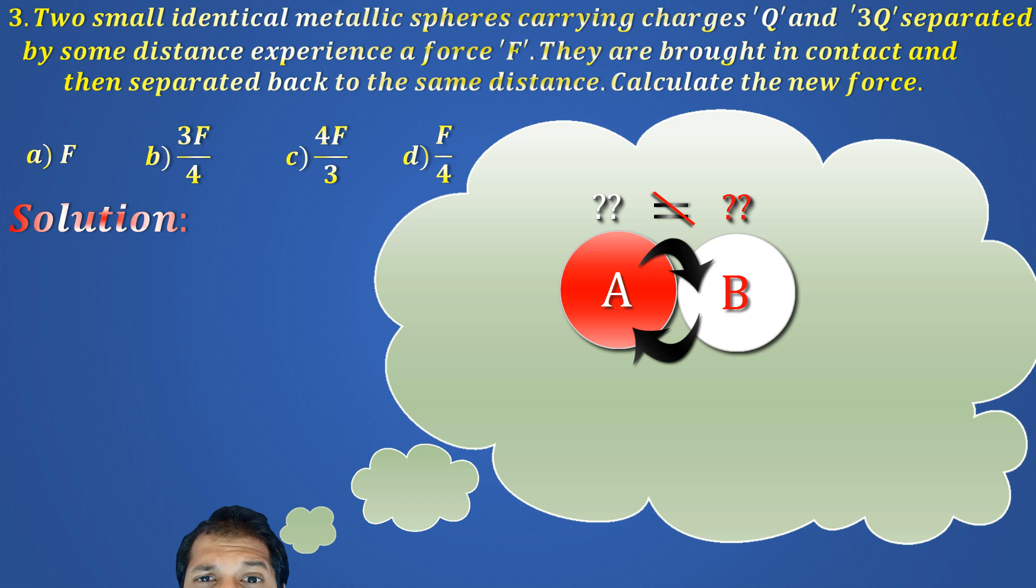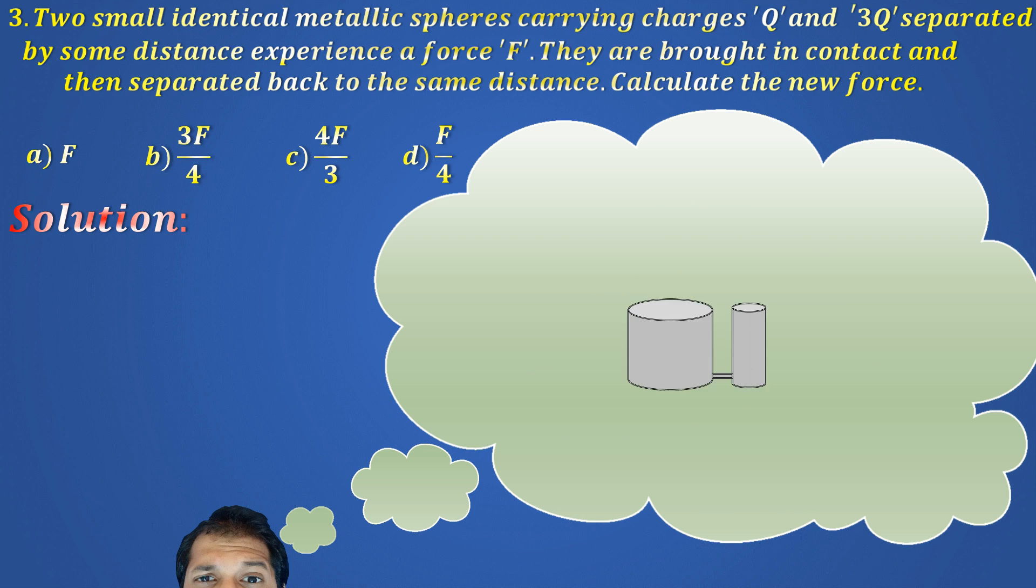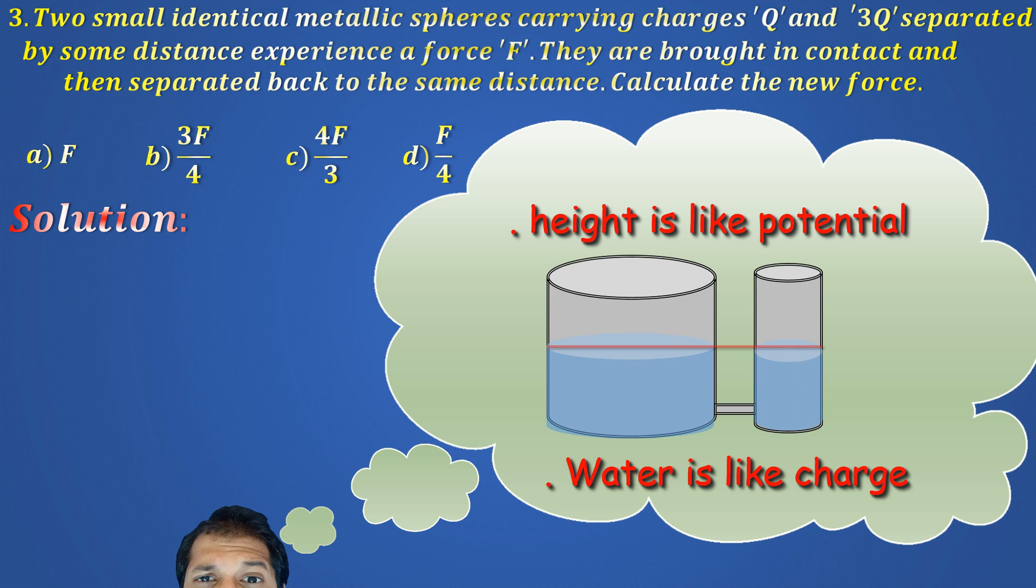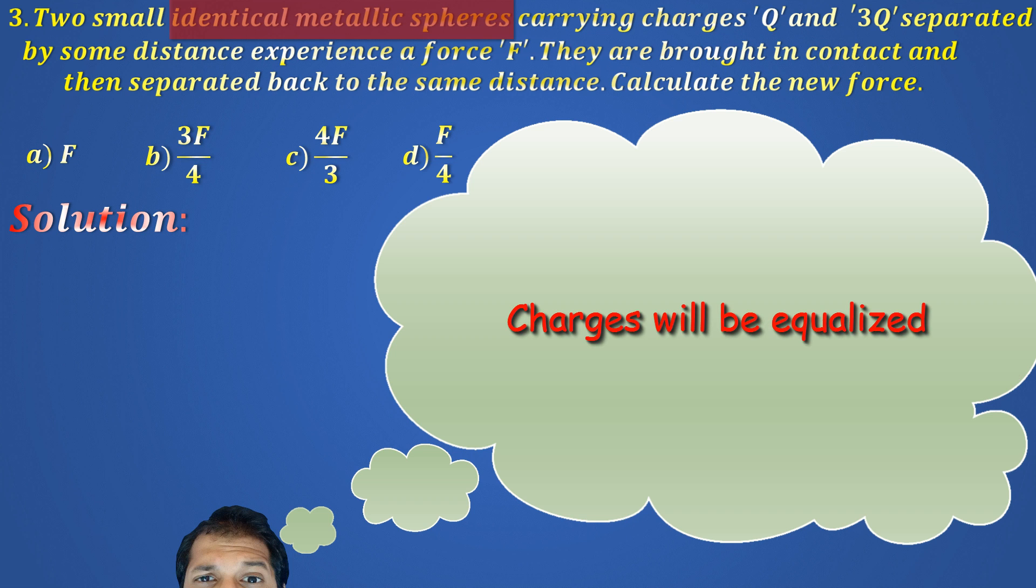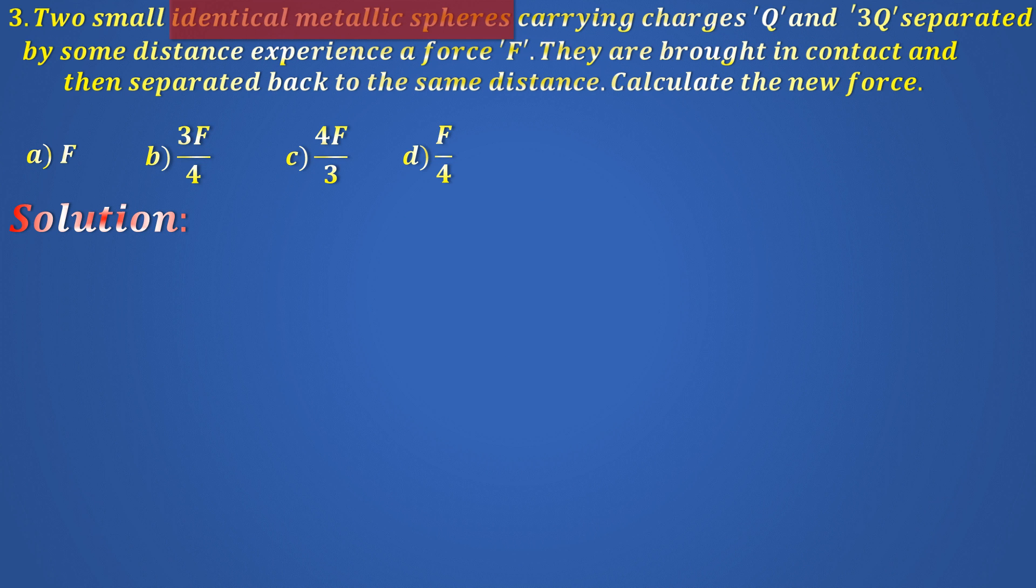You may be inclined to think that charge transfer takes place until charges are equalized. However, in general, that is not true. Charge transfer always takes place until the potentials are equalized. Think of two beakers connected together with water in one of them. The water will flow until the heights are equal. The height is equivalent to potential and the water is like charge. However, if the beakers are identical in shape, then when the heights are equal, even the amount of water ends up becoming equal. Our question specifically mentions that the spheres are identical. Thus, they must end up with the same charge. So, how do we calculate that charge? The answer is simple. Charge conservation.